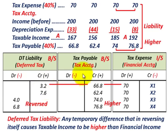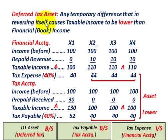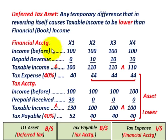Now let's look at a deferred tax asset. A deferred tax asset is any temporary difference that, in reversing itself, causes taxable income to be lower than financial or book income. We'll lay out our financial or book income versus tax accounting income over four years.